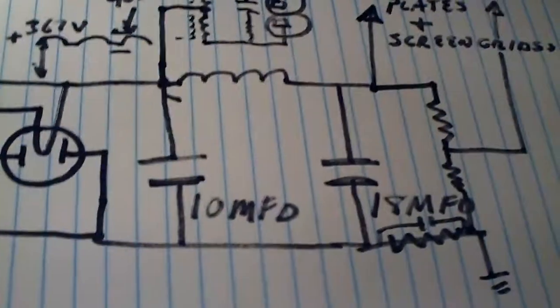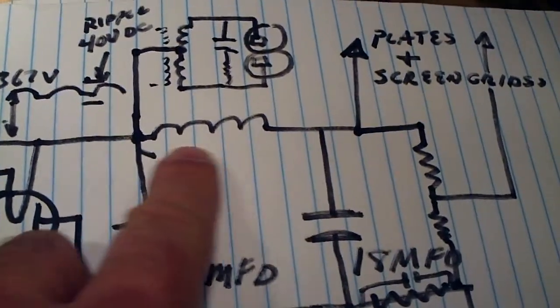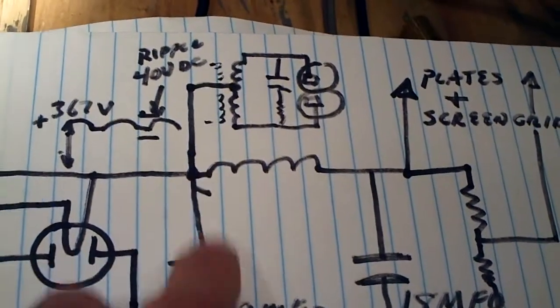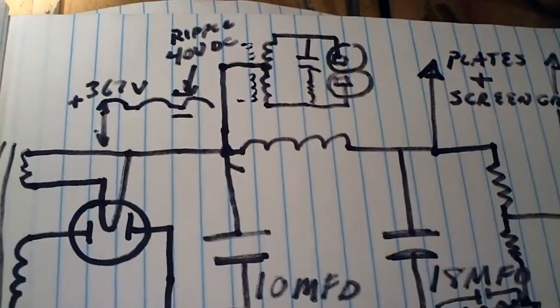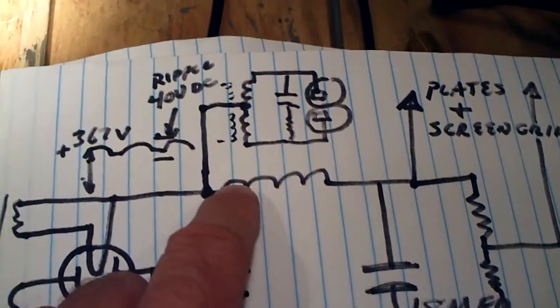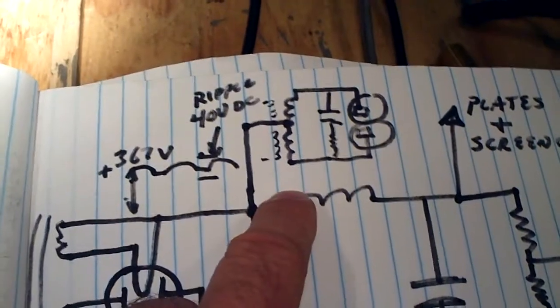And let me show you something real quick here. I drew this out. And this is a pi-filter here. And they call it that because it resembles a Greek letter pi. And the 42 tubes get the power from this capacitor here. And there's ripple on here, but it doesn't matter. The way this push-pull is configured, the ripple cancels out, and it doesn't matter.